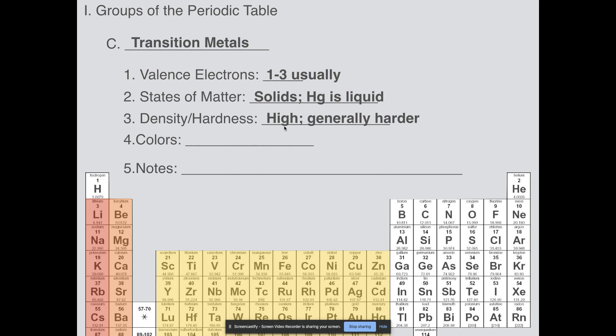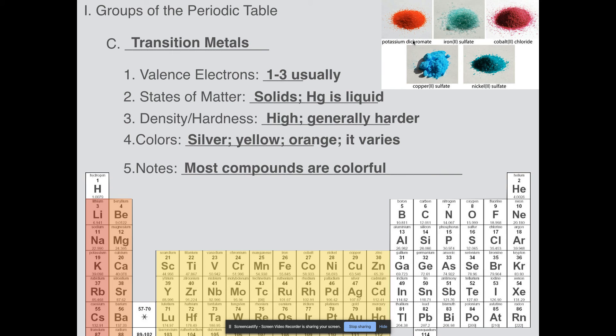Density: generally pretty high. Hardness: generally pretty hard. Colors: most of them are still silvery gray, but gold is going to be more of a yellow color, copper is going to be an orange color. Some of them discolor when they oxidize, so it varies. Something to note is that most of the compounds are very colorful. We have iron 2-sulfate, cobalt 2-chloride, copper 2-sulfate, nickel 2-sulfate. All of these are transition metal compounds. And potassium dichromate, the dichromate part has chromium in it, so you get these really bright colors.